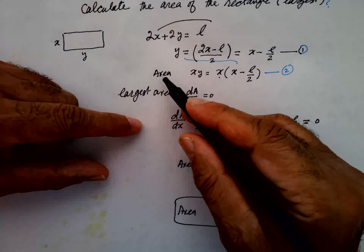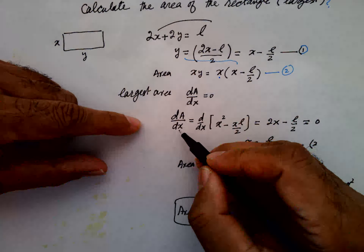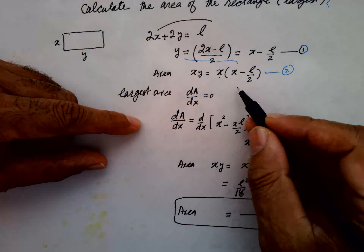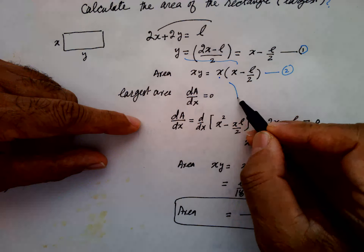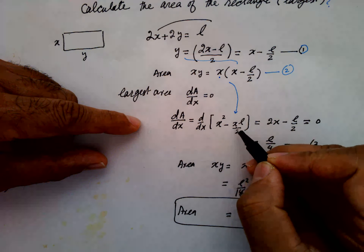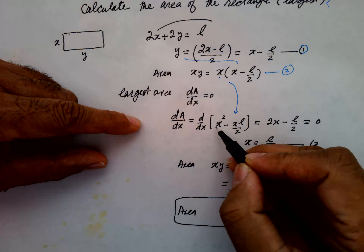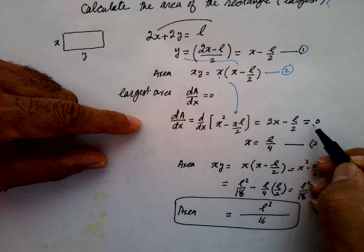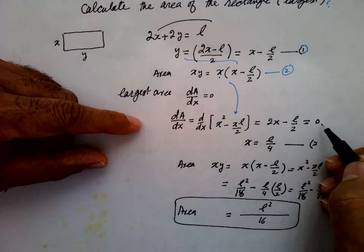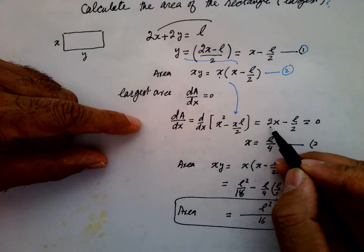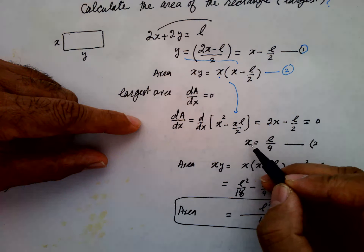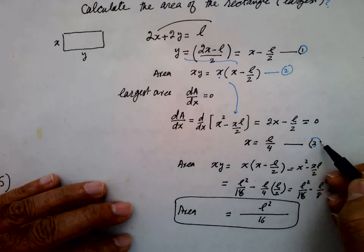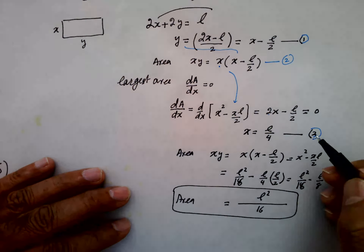So DA by DX, which is the derivative of the area, equals D by DX of X squared minus XL over 2. This gives 2X minus L over 2, which equals 0. So 2X equals L over 2, therefore X equals L by 4. This is equation number 3.